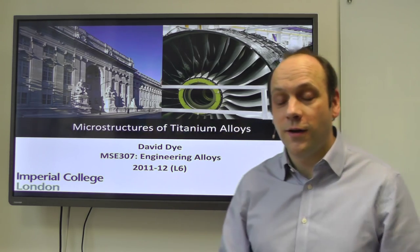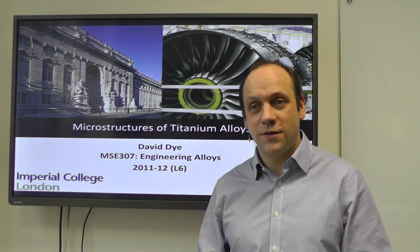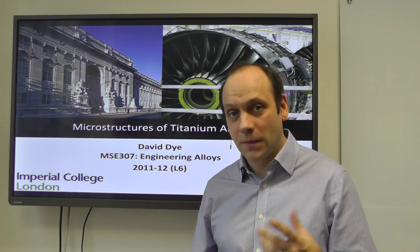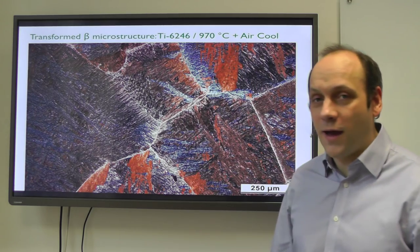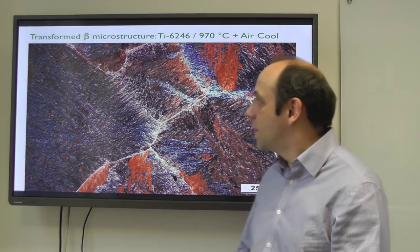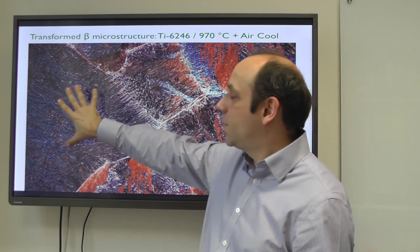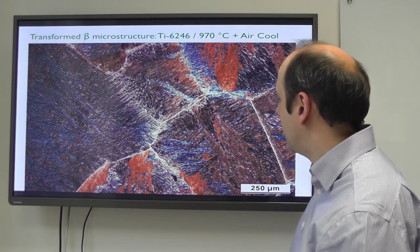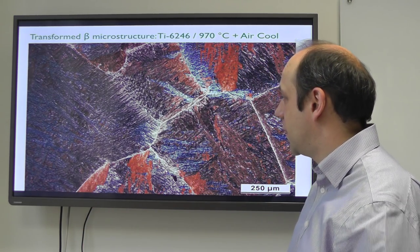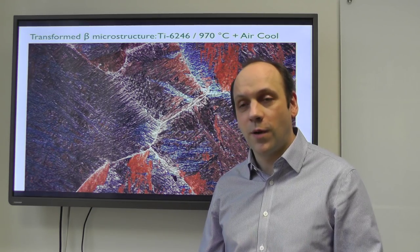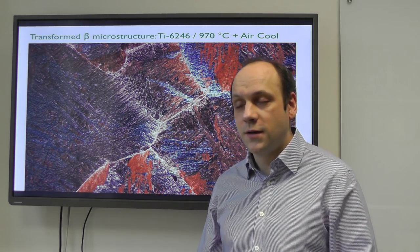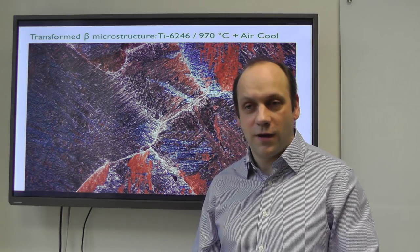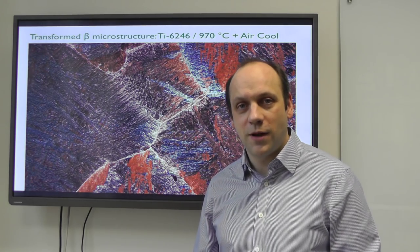In this lecture we are going to look at how we process titanium alloys to generate different microstructures - the formation of microstructure in titanium alloys. The dominant issue is that you have large prior beta grains that recrystallize very fast, giving lots of grain growth. It's very difficult to get prior beta grains much smaller than a few hundred microns - two, three, four, five hundred microns. As cast, you'd have prior beta grains on the order of five to ten-plus millimetres in size.